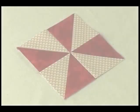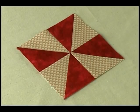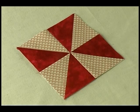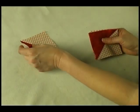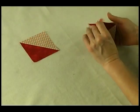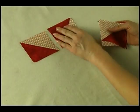A pinwheel block is made from four equal-sized half square triangle blocks. When sewn together the half square triangles should appear to be blowing in one direction. Refer to the segment on making half square triangles from fabric strips in this DVD before beginning. Make four three and a half inch half square triangle blocks with contrasting fabrics.